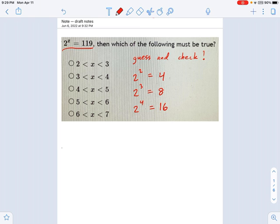And you can see we're nowhere near 119, so we can rule out some of these things. x is not between 2 and 3, x is not between 3 and 4. This is what I mean by guess and check, and you just keep going.